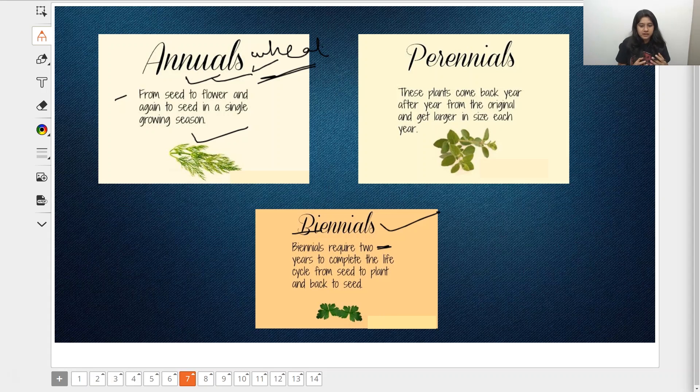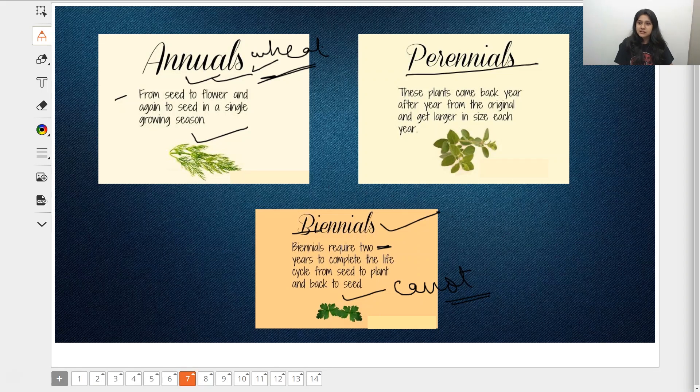From seed to flowers and back to seeds in a single growing season - these are called annual plants. Next is biennial plants, like carrot. They require two years to complete the cycle from seed to plant. They'll wait a long time before the reproductive phase, and once they have it, they go back to seed form.